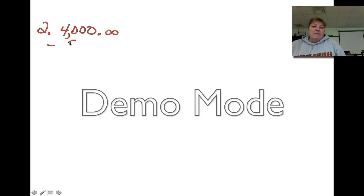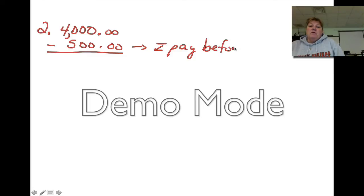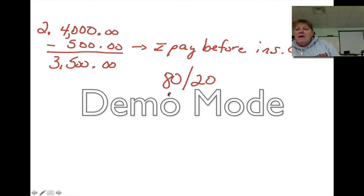We already know we're going to subtract $500 because that's what I pay. I have to pay that before insurance, before they ever insurance starts. So that's $3,500. We've already done that. All right, now my insurance pays, if you see an 80-20, that means that the insurance pays this and I pay that.